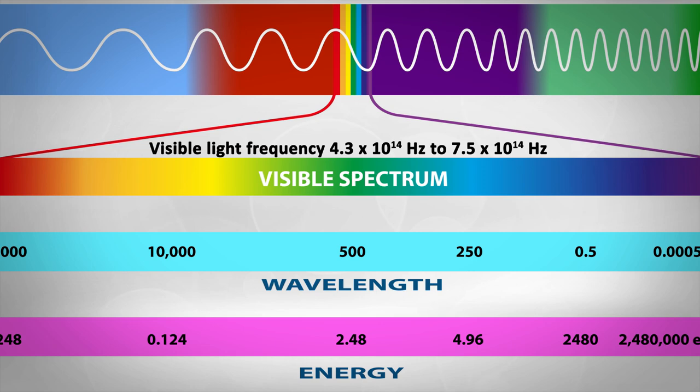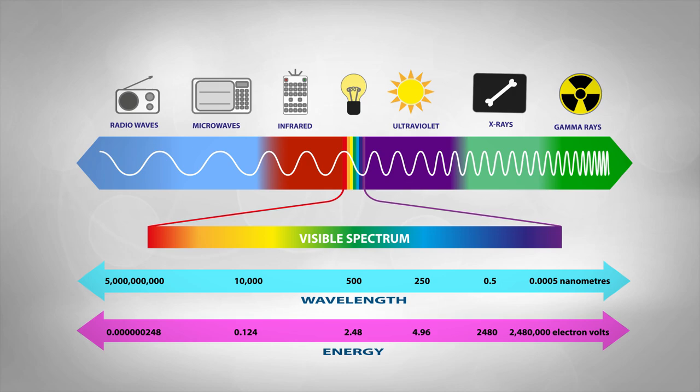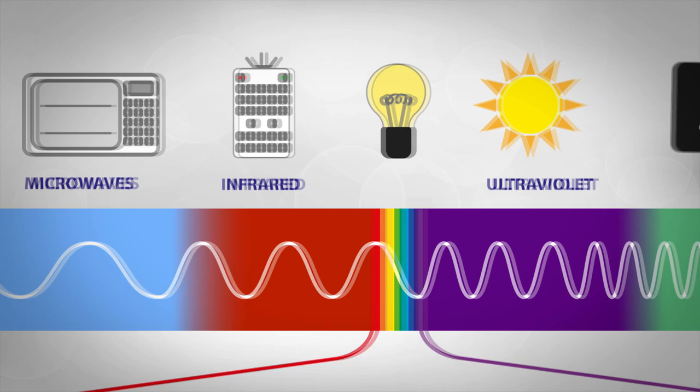The part where the electromagnetic wave has a frequency between 4.3 times 10 to the 14 hertz to 7.5 times 10 to the 14 hertz. This spectrum also contains any other imaginable frequency. For example, all the light that we can't see such as radio waves, microwaves, infrared light, ultraviolet light, x-rays, and gamma rays.